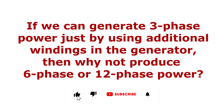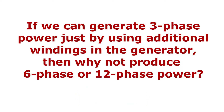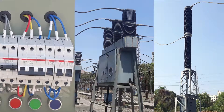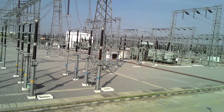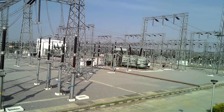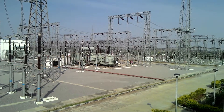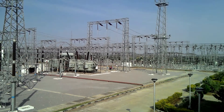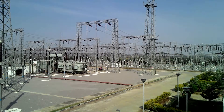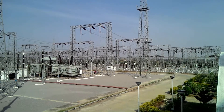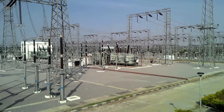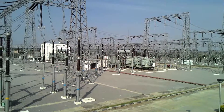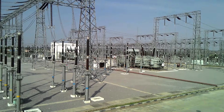Another question may arise: if we can generate three-phase power just by using additional windings in the generator, then why not produce six-phase or twelve-phase power? As we know, we have three-pole circuit breakers, three-conductor transmission lines, three-phase transformers, and all other equipment suitable for a three-phase power system. These three-phase power installations already increase complexity and cost compared to single-phase. This complexity and cost increase very drastically for more than three phases — such as six or twelve phases. Hence, after thorough study and analysis, it is found that only a three-phase system offers an optimally complex and economic solution. Similarly, using fewer phases — two phases or single phase — is not desirable.